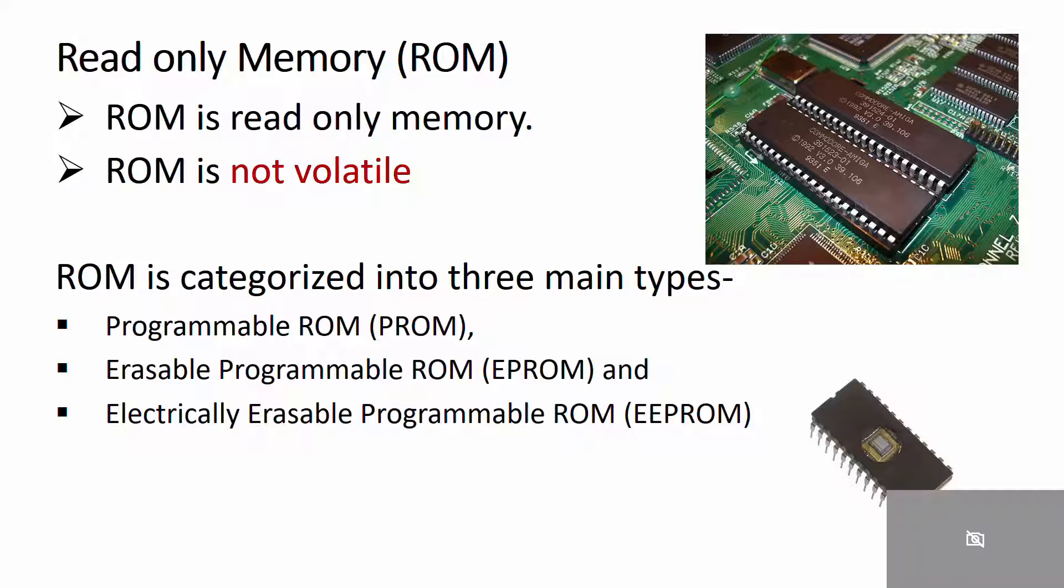Primary memory is categorized into two main types: read-only memory and random access memory. ROM is read-only memory. This memory cannot be changed and it can only be read as required. Since ROM is unchangeable memory, it is used by data and programs that are frequently required and seldom changed, like the system boot program.